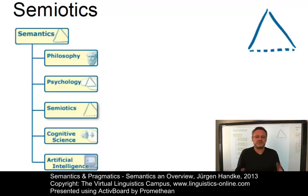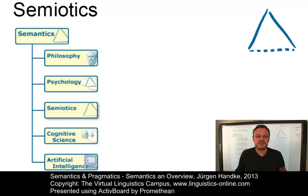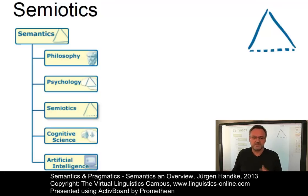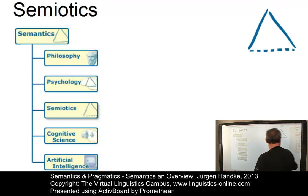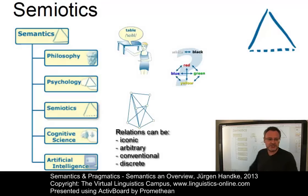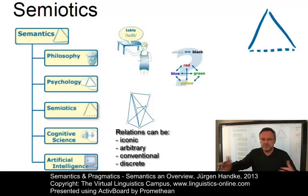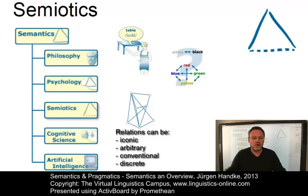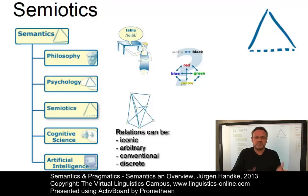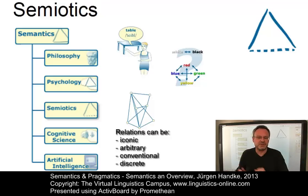Semiotic relationships are interested in the types of relationship that may hold between a sign and the entity it represents, which include iconic relationships, arbitrary relations, and conventional and discrete relations between sign and symbol.